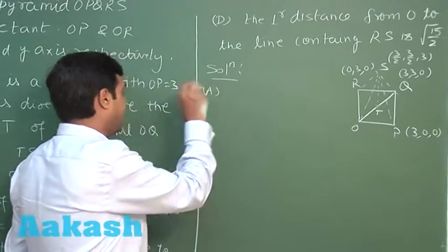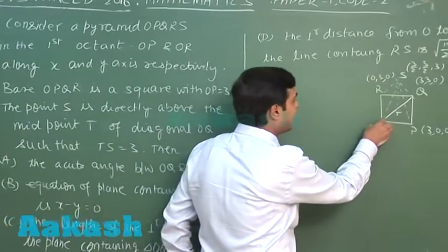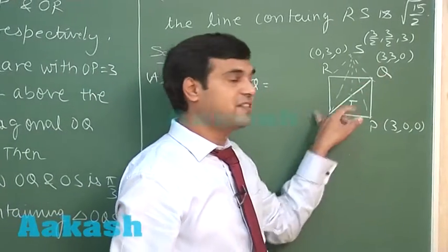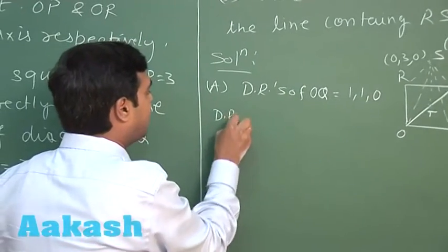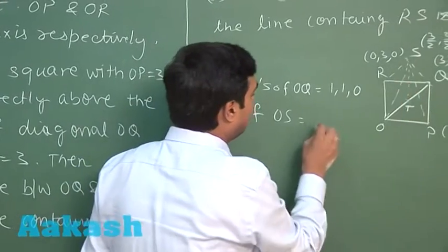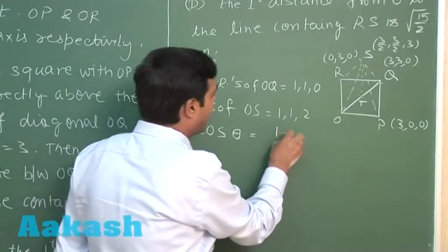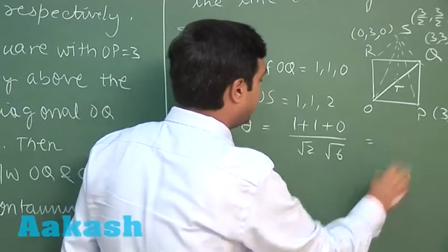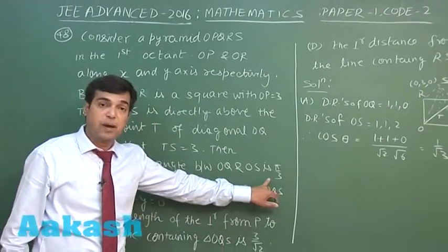For option A, we find the acute angle between OQ and OS. Direction ratios of OQ are (1, 1, 0) and of OS are (1, 1, 2). So cos θ = (1 + 1 + 0) / (√2 · √6) = 2 / (2√3) = 1/√3. This means option A, which states the angle is π/3, is incorrect.